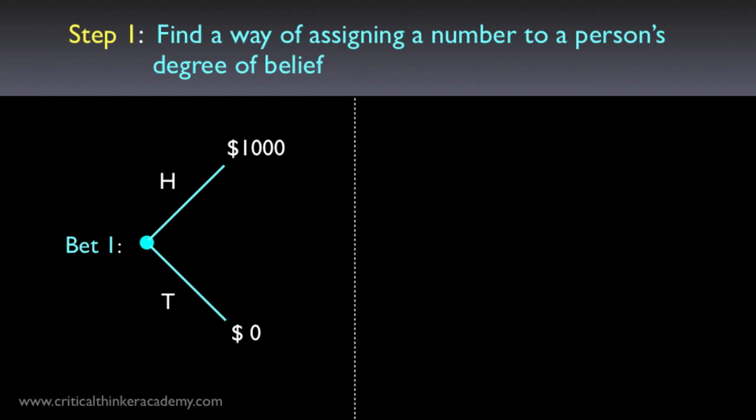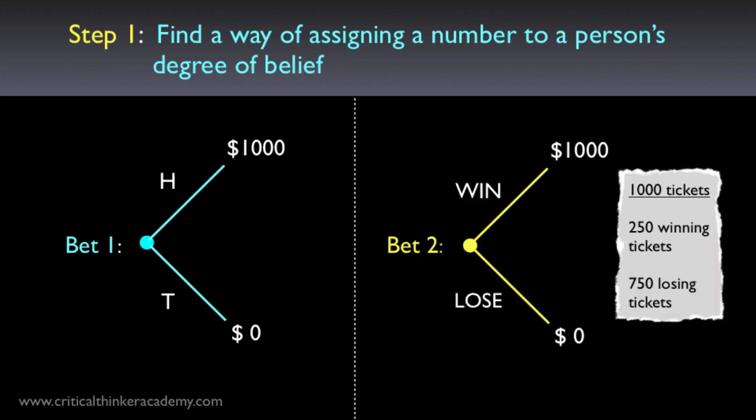We imagine that we're faced with a choice to select between two different bets. Bet number one: whether the coin will land heads — if it lands heads, you win $1,000; if it lands tails, you win nothing. Bet number two: you play a lottery with 1,000 tickets, of which 250 are winning tickets — if you draw a winning ticket you win $1,000, otherwise nothing. Which bet would you prefer? Well, we're all going to pick bet one, because we think the odds of the coin landing heads are higher than the odds of winning the lottery, which is only 25%. We believe we're more likely to win bet one than bet two.